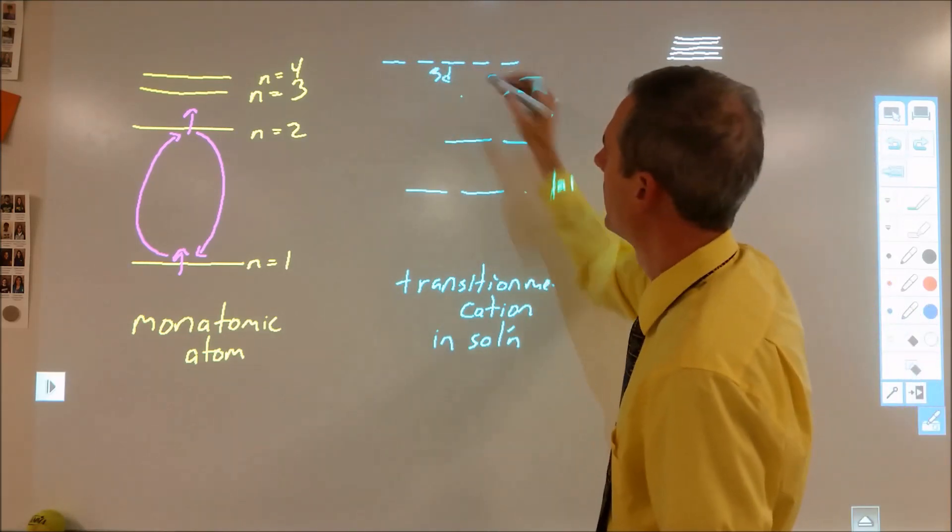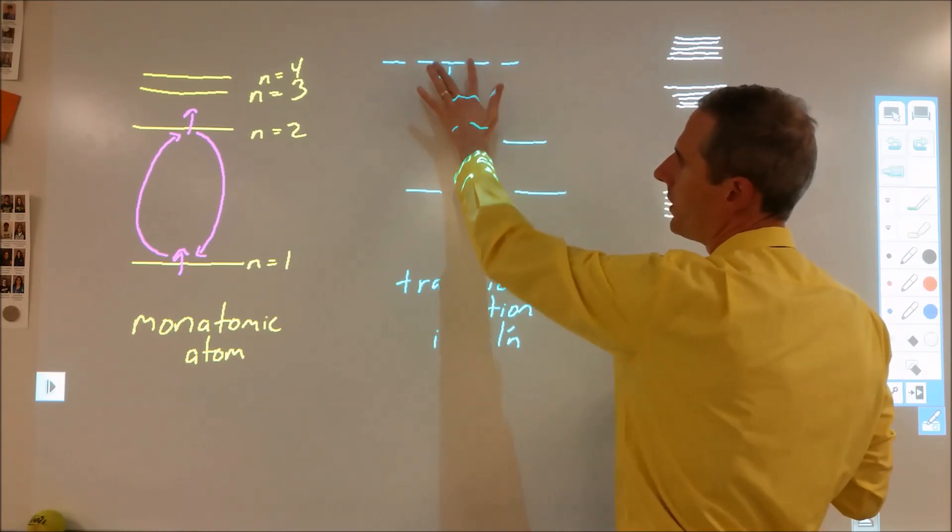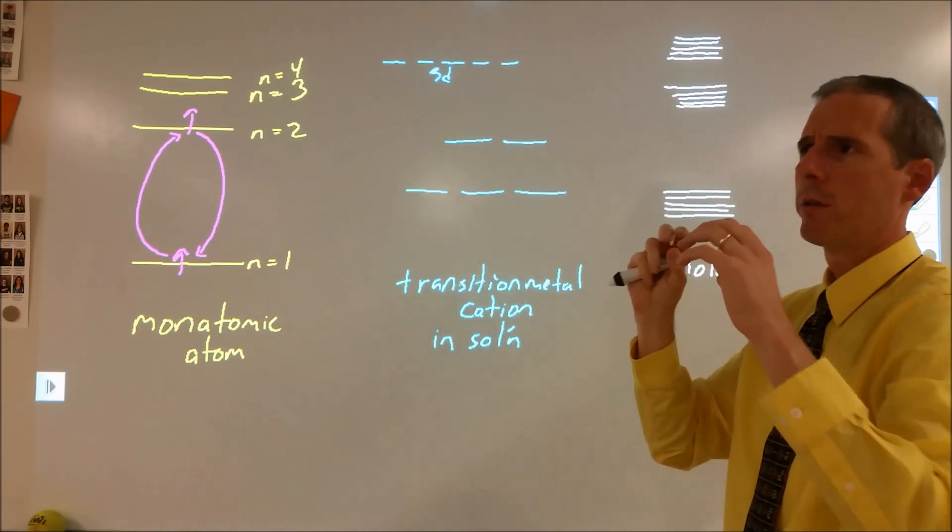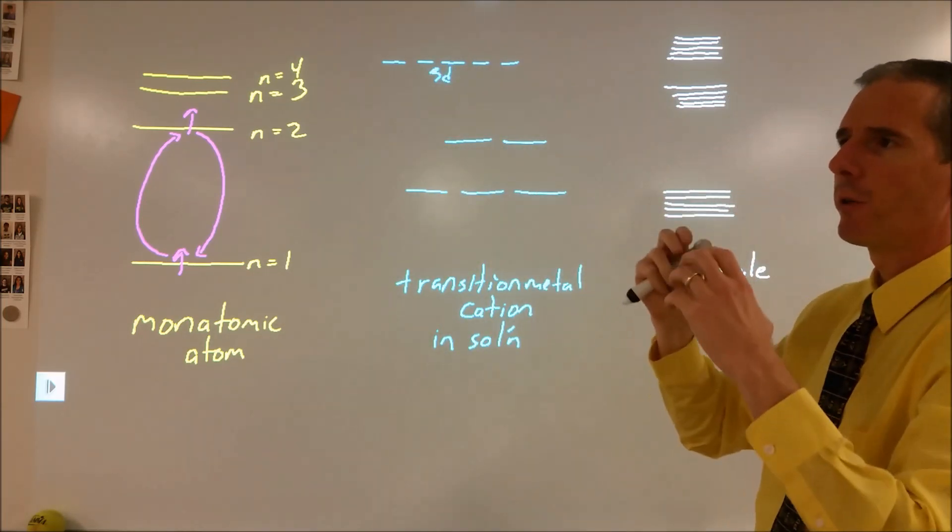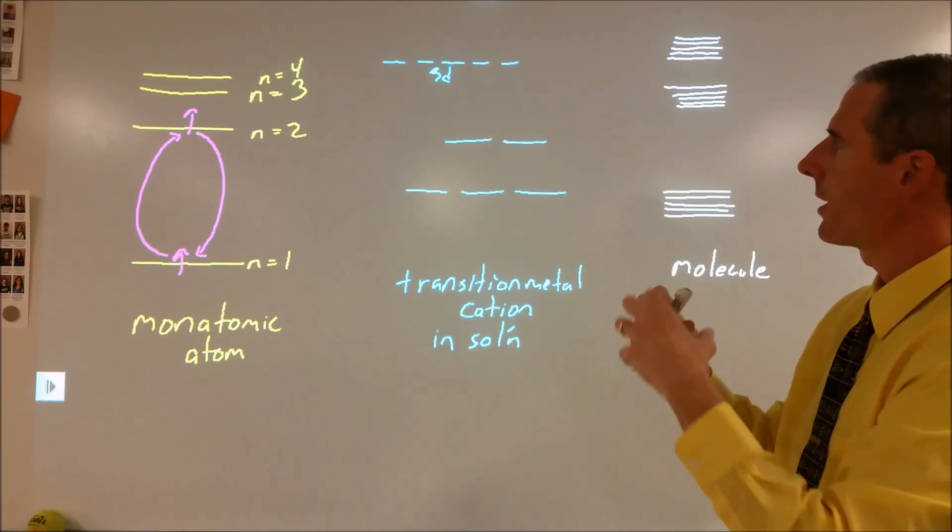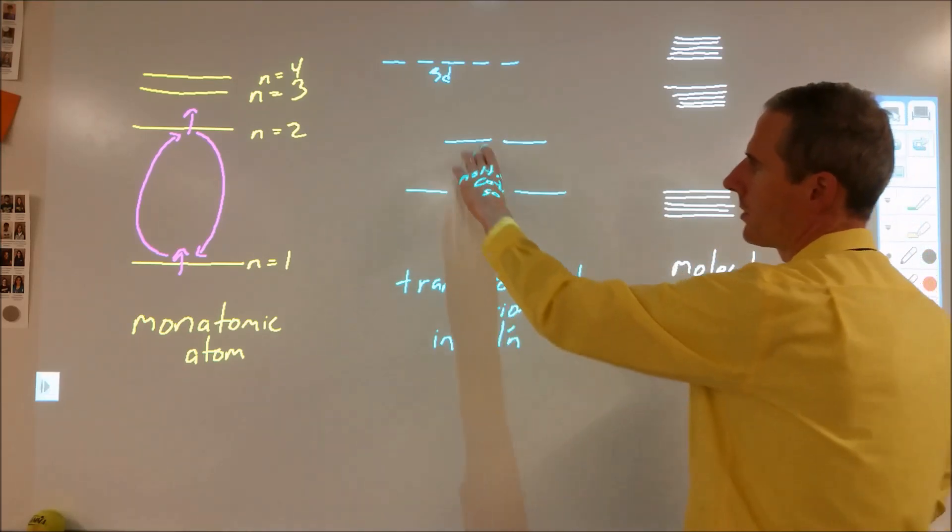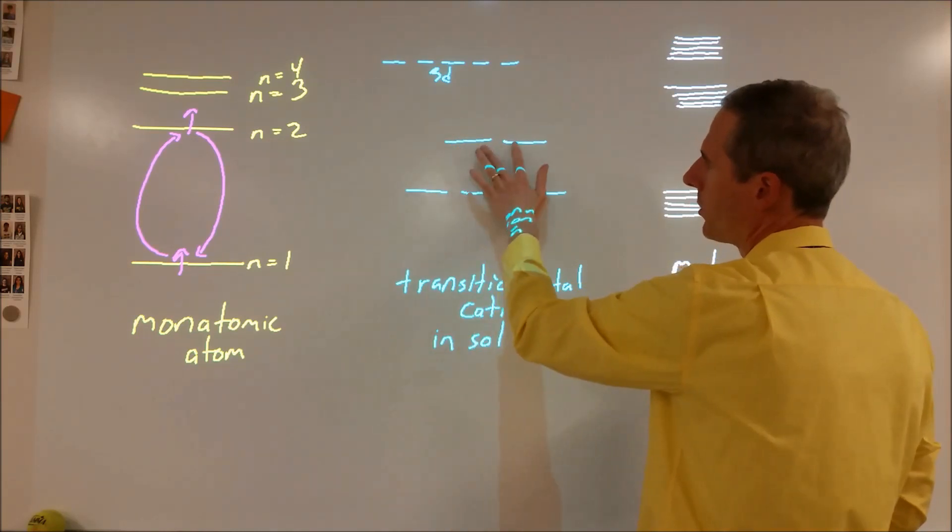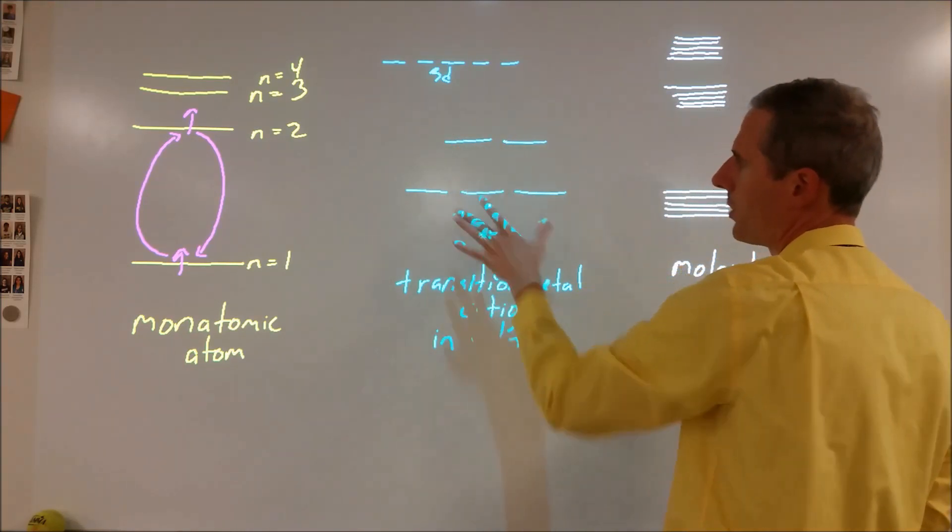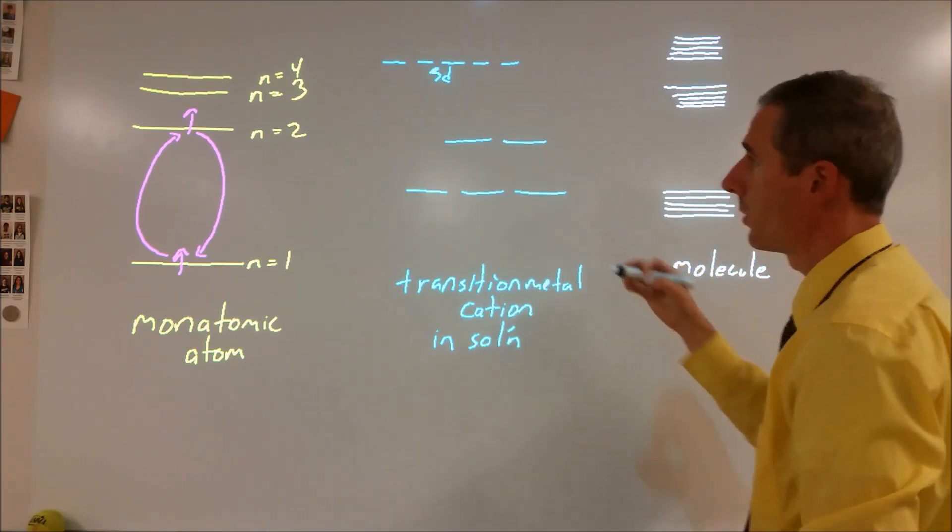Normally if we had a set of 3d orbitals, we would have degenerate orbitals where they're all the same energy. But two of these are spaced where they are further or closer to the water molecules that surround the ion, and it causes distortion where two of the orbitals end up at a different energy than the other three.